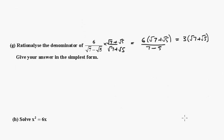And finally, this one. Taking the 6x across, we get x times x minus 6 equals 0. Therefore x will be equal to 0, or x will be equal to 6.